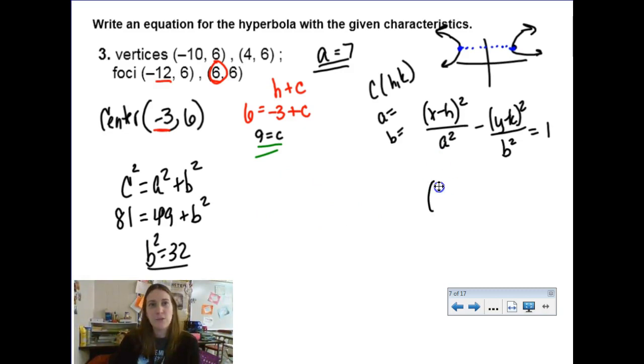So back to this formula here. x minus h, for us, that would be x plus 3 squared over a squared, which will be 7 squared would be 49, minus y minus k, so y minus 6, over b squared, which is found as 32. And then, of course, equals 1 at the end of our conic. Okay, that wasn't too bad.